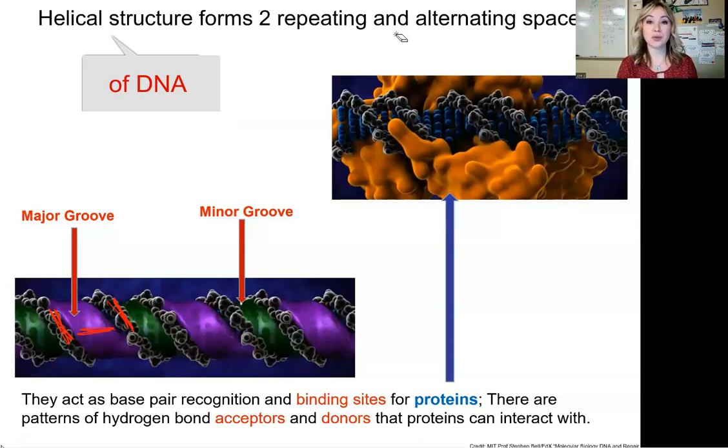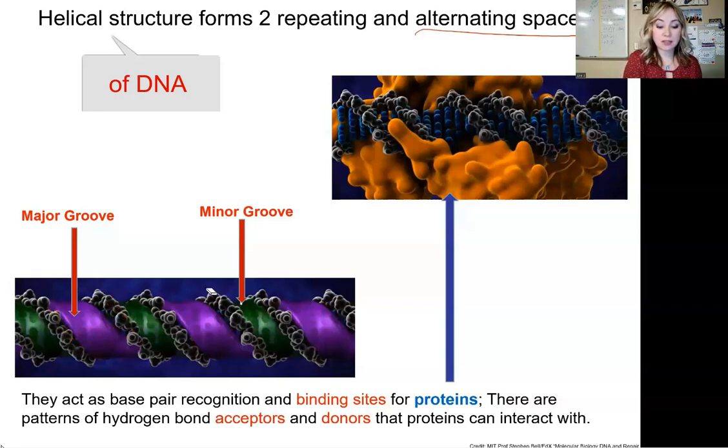The helical structure forms two repeating and alternating spaces. If we look at the backbones in the helix, notice that space is not going to be even. We have unevenly spaced regions from backbone to backbone.